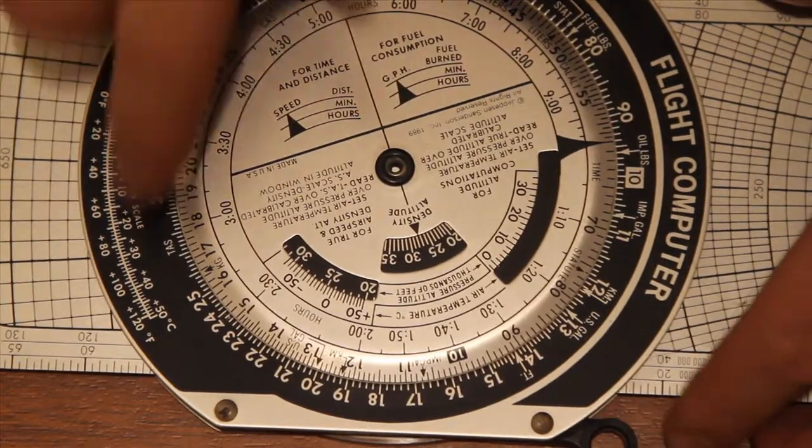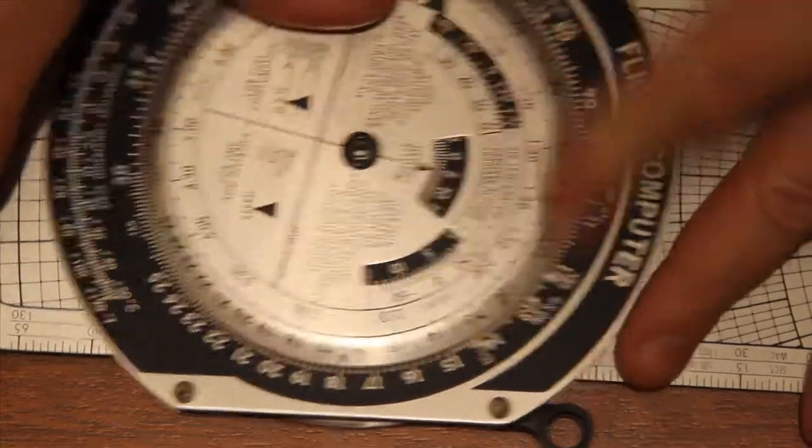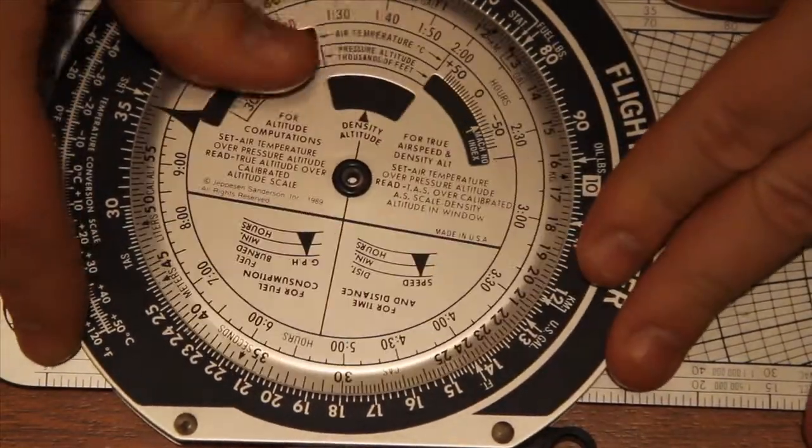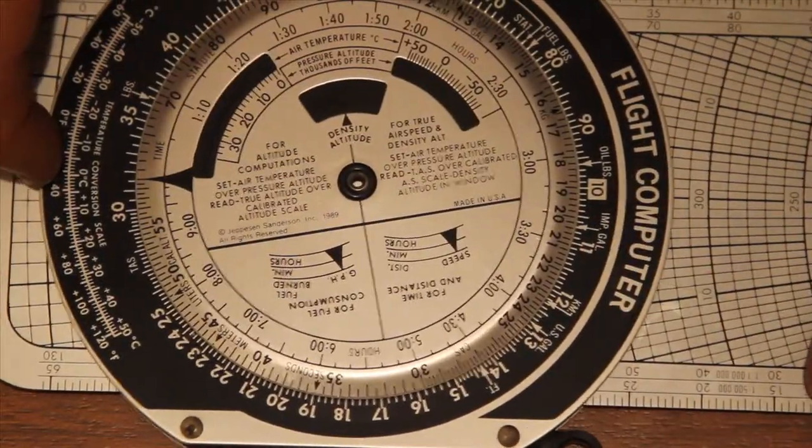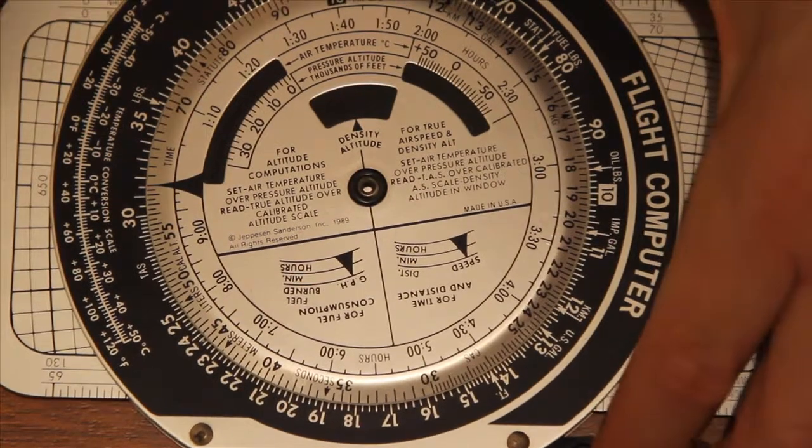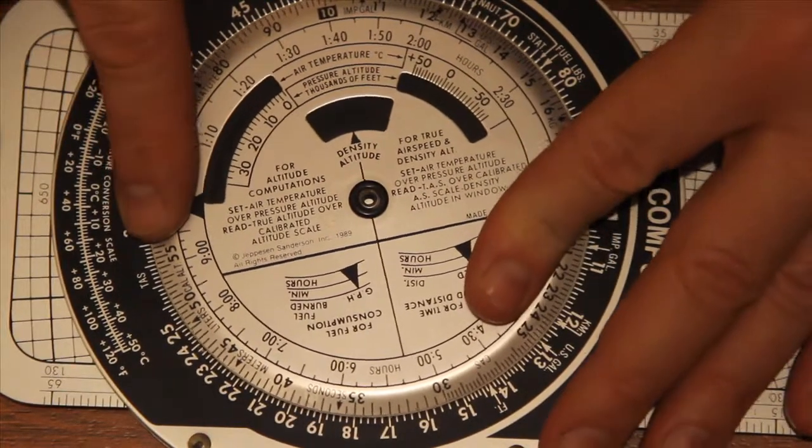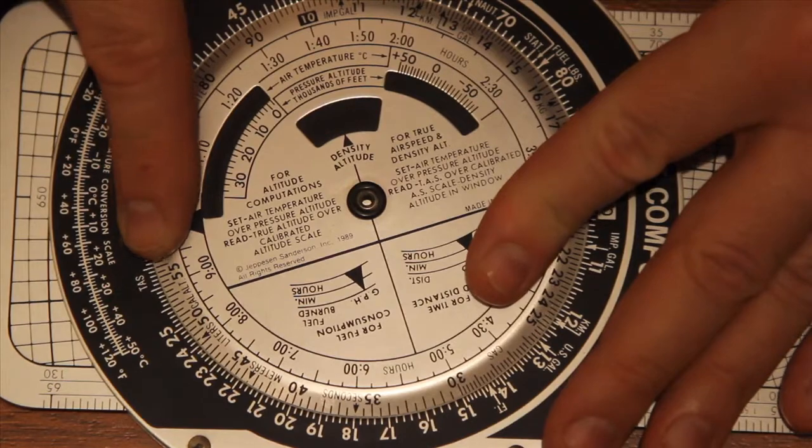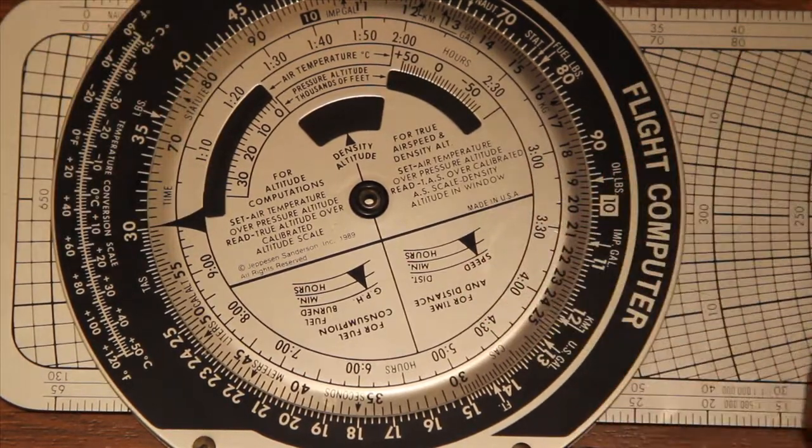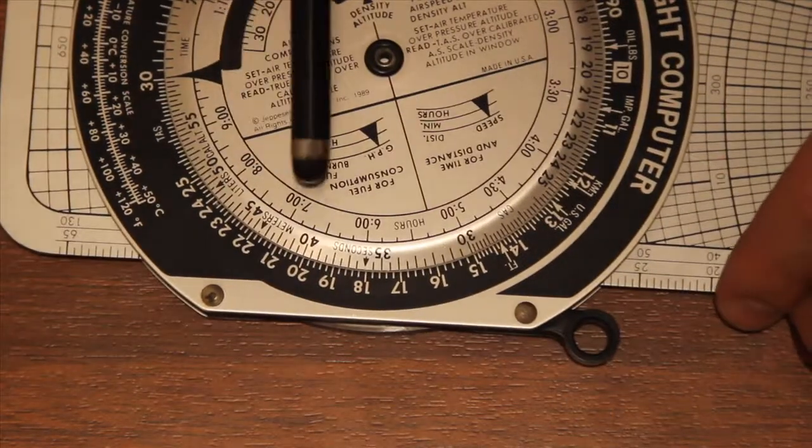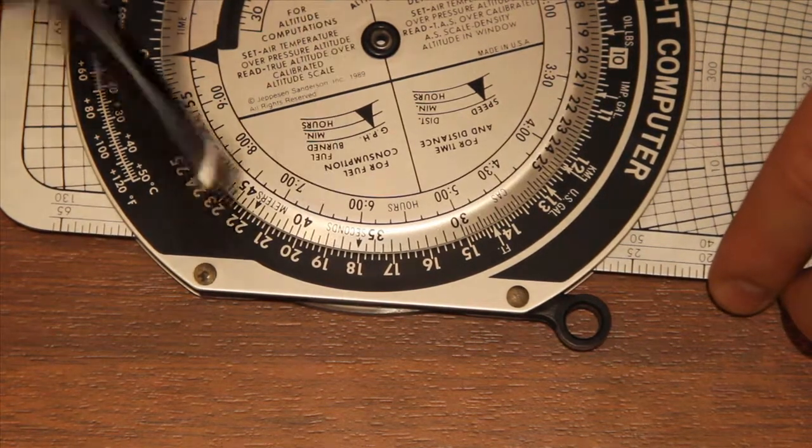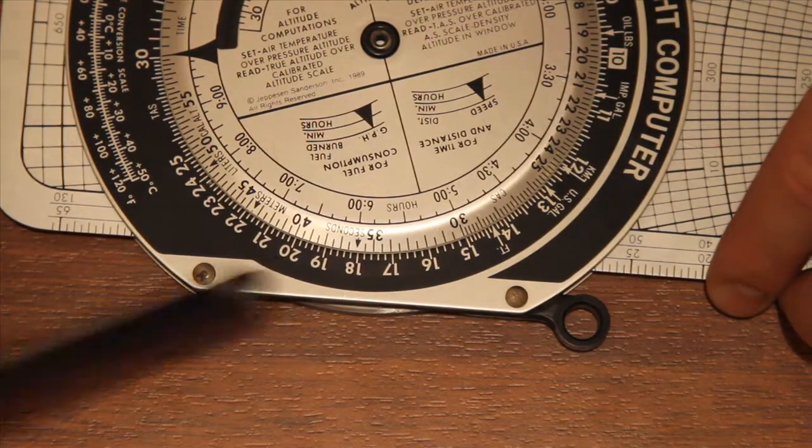You do it by moving the wheel around to the number that you wish to multiply by. For example, let's do 5 times 4. So we move the 10 wheel around to the 5, and then we read 4 off the inner scale, and you can see that the answer is 20.